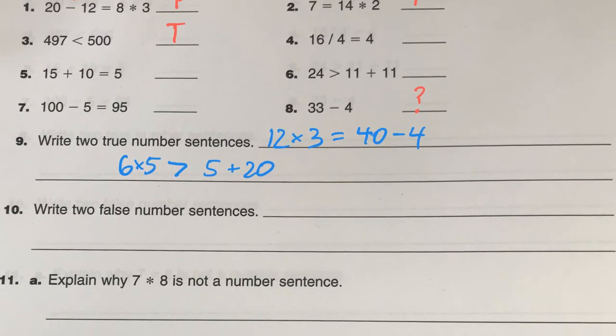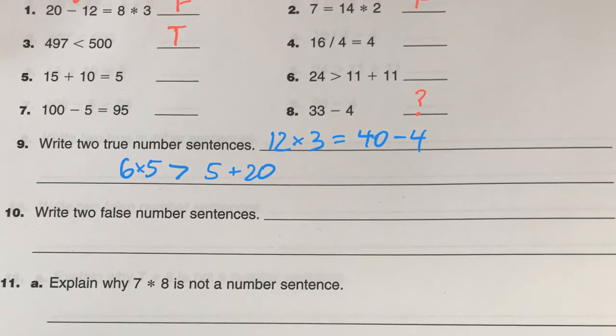Then I make a false one. So again, anything that's not true, so 100 times 3 is less than 50 times 4. That is false, right? Because 300 is not less than 200. So write two false number statements.